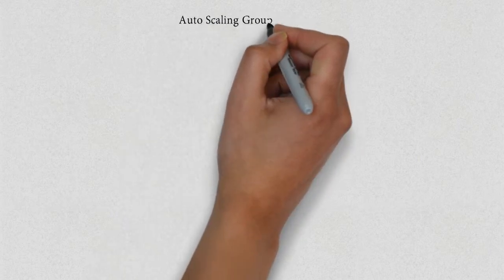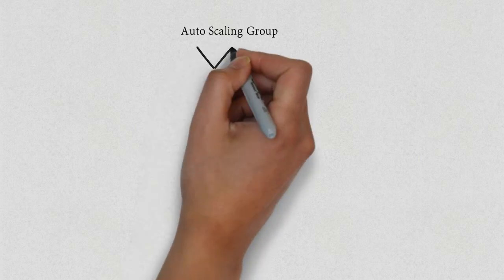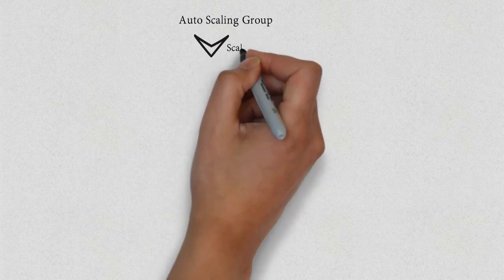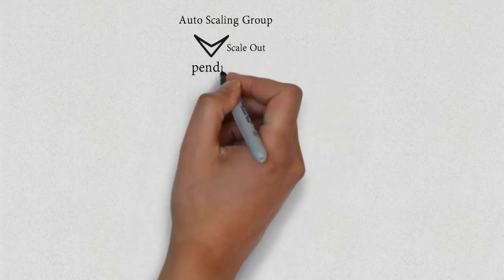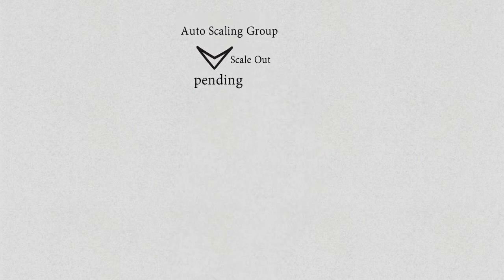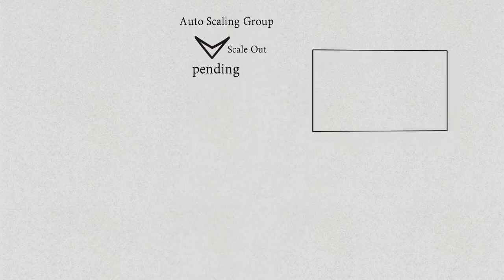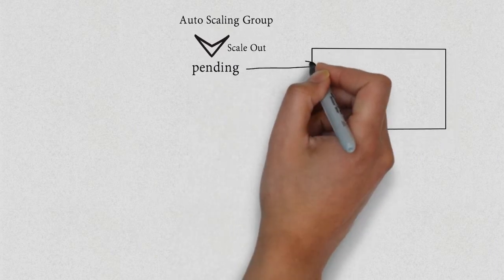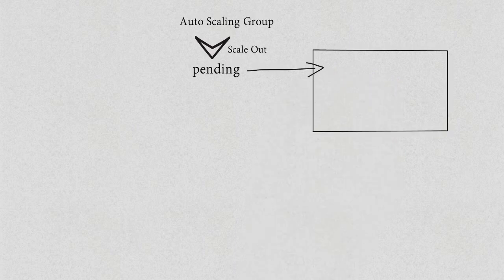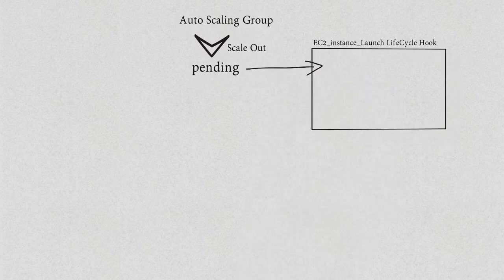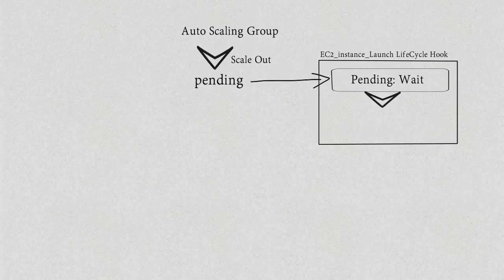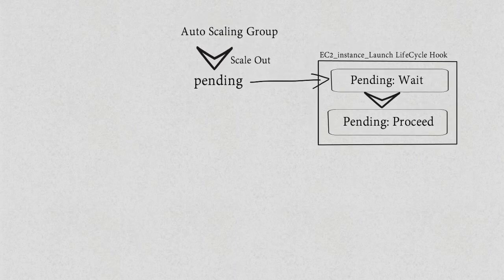Now let us see how the autoscaling group works. When the demand is increased, autoscaling scales out. Then it goes to pending status, then it will enter the EC2 instance launching life cycle hook — which I will explain in the next video. So in the pending state it will wait, then proceed to in-service.